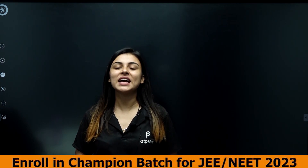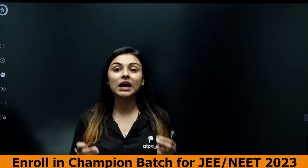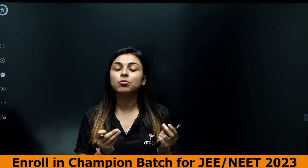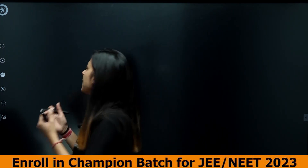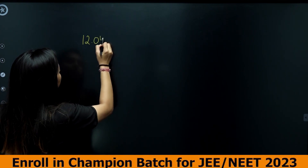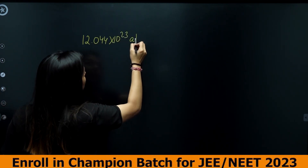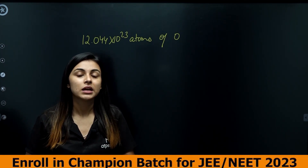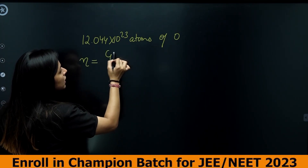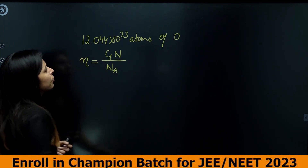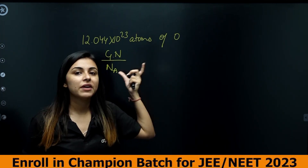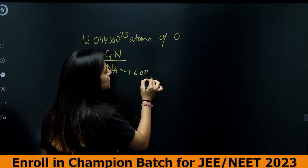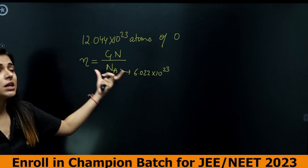Hello students, welcome to ATP Star, the super learning platform. I am your Anushka ma'am. Today we are going to study the mole concept in more detail. We have learned how to calculate moles when a number is given — for example, if I have 12.044 × 10²³ atoms of oxygen, the number of moles equals the given number of entities divided by Avogadro's number, which is 6.022 × 10²³.